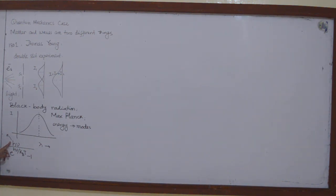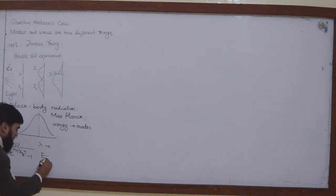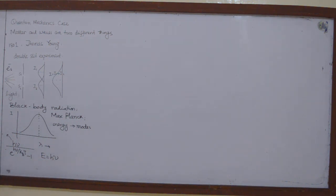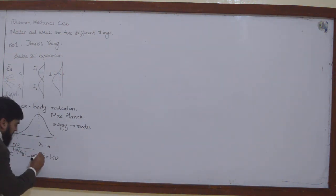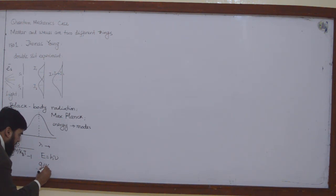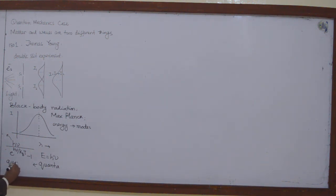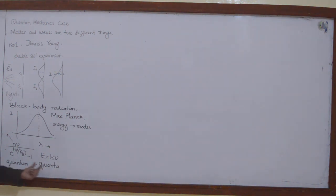He said that energy is not something continuous — it is actually discrete in nature. The energy can be written as E = Hν, where ν is the frequency and H is the Planck constant. These were called discrete packets of energy, and those packets were named quanta — the singular form is quantum.